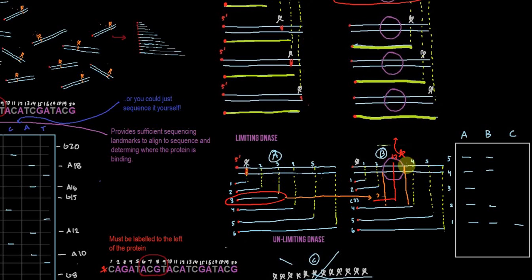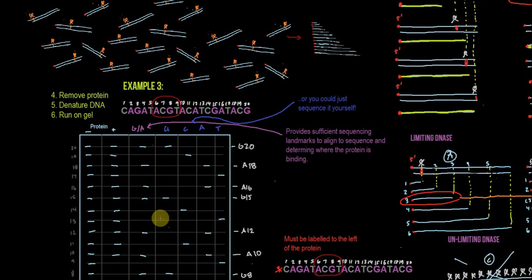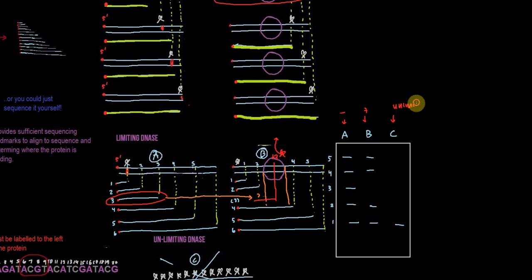After we do our limited DNase treatment, what happens next? We remove the protein, we denature the DNA to make it single-stranded, and then we run it out on a gel. This gives us gel lanes: A is no protein, B is with protein, and C is unlimited DNase. We'll save lane C for a little bit and just focus on A and B right now.